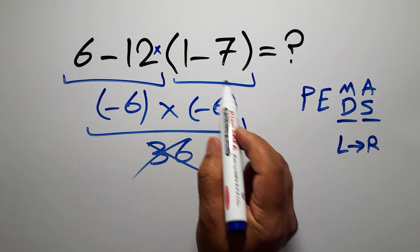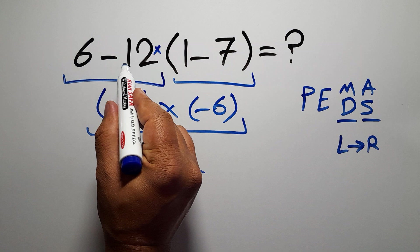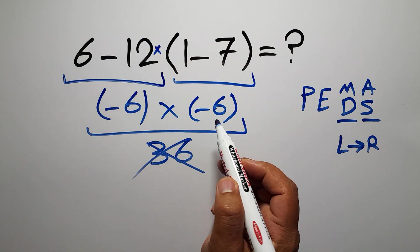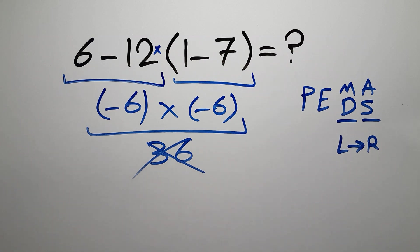Inside these parentheses we have 1 subtraction. We need to pay attention that in mathematics, when a number is placed next to parentheses, it means multiplication. We usually don't write the multiplication sign for brevity.